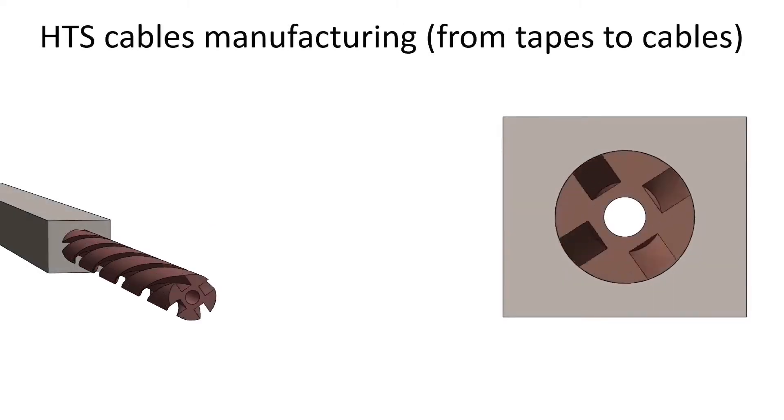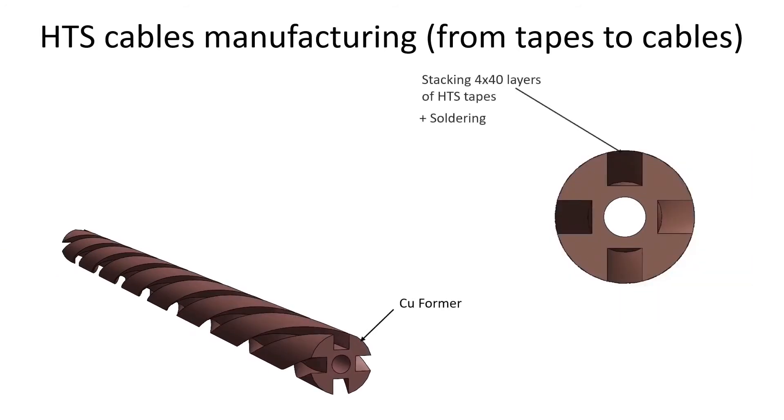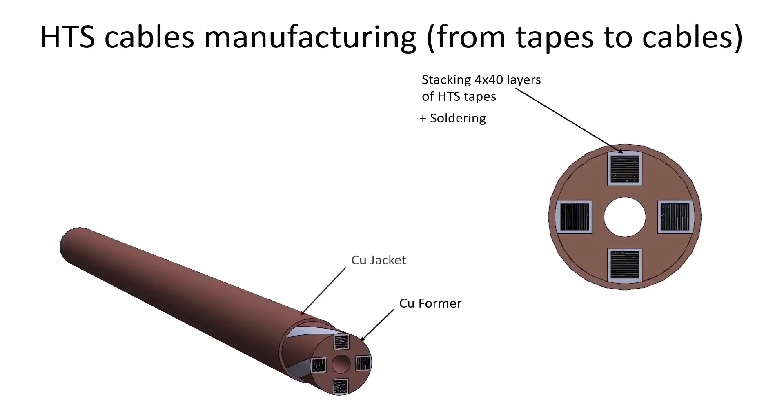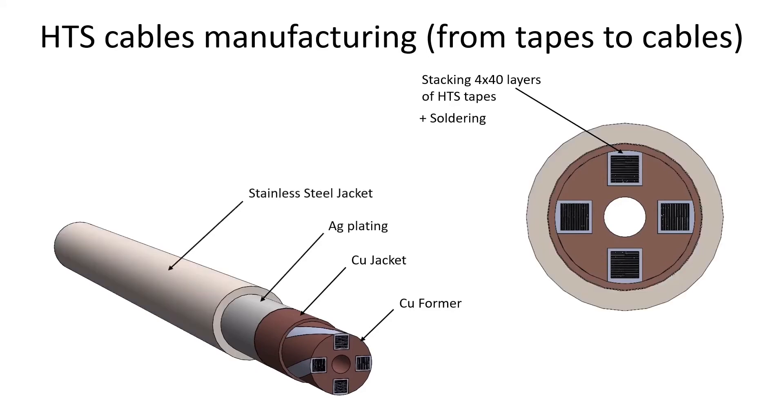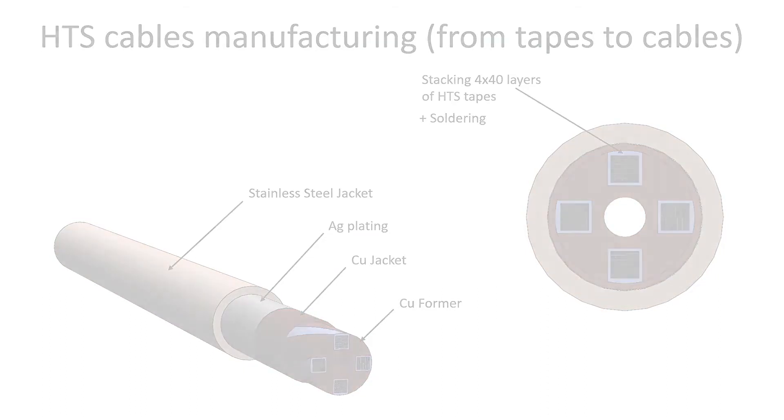Superconducting cables are then made by winding the tapes on a metallic former. In this case, we are showing the VIPER cable made at MIT that has four parts in addition to the high temperature superconducting tapes. There exist several other cable configurations.